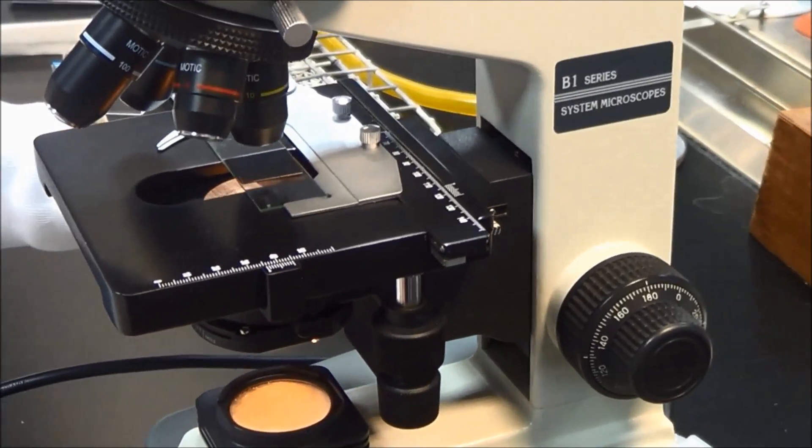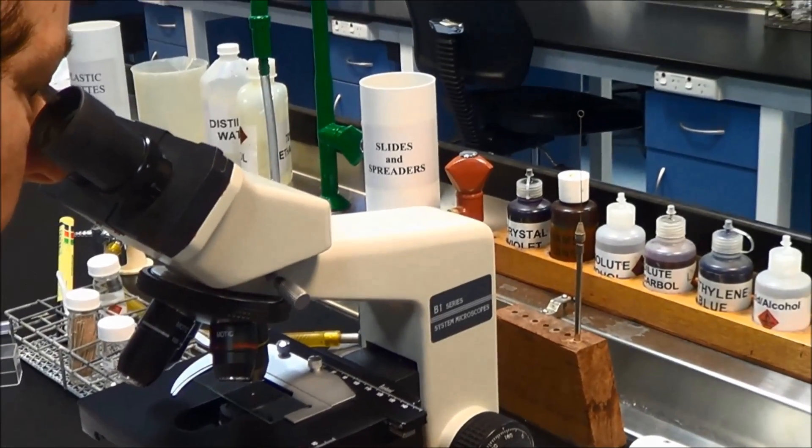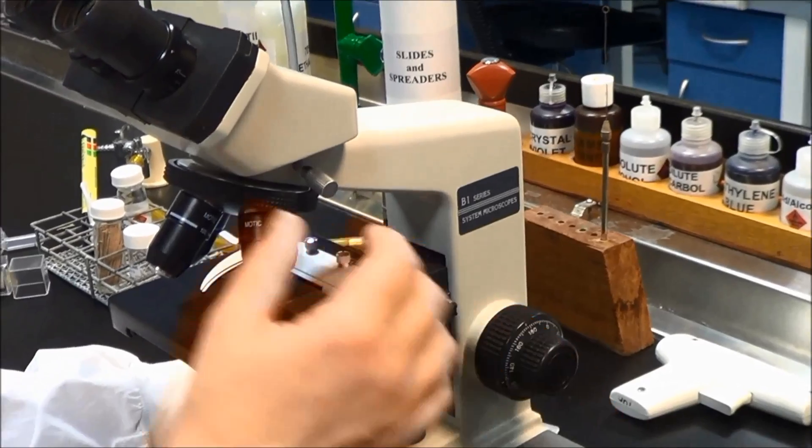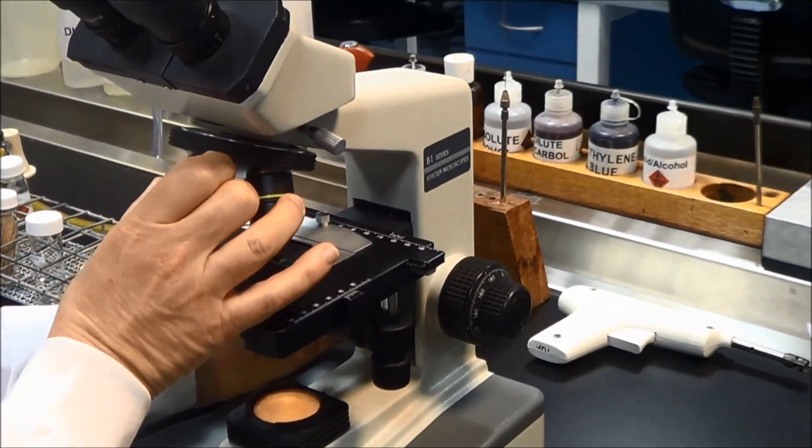Once in focus on low power, move to the 40× objective. If a capsule is present, it will exclude the particles of India ink and the capsule will appear as a clear halo around each cell.